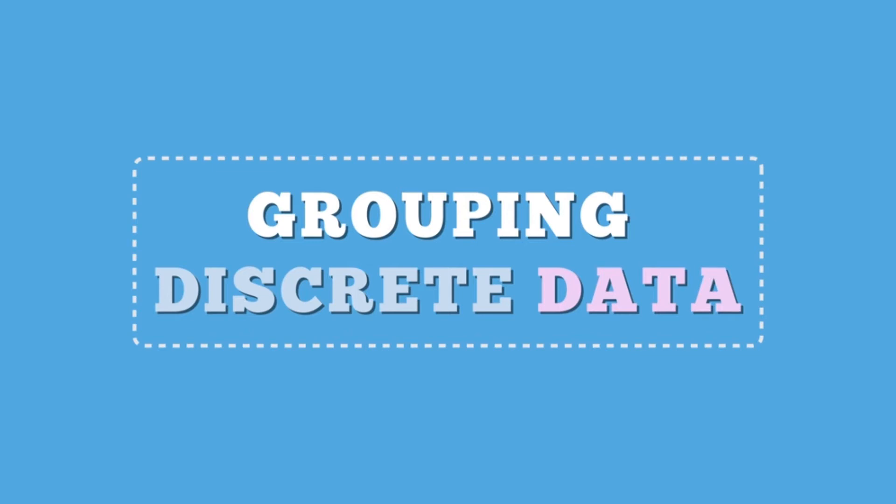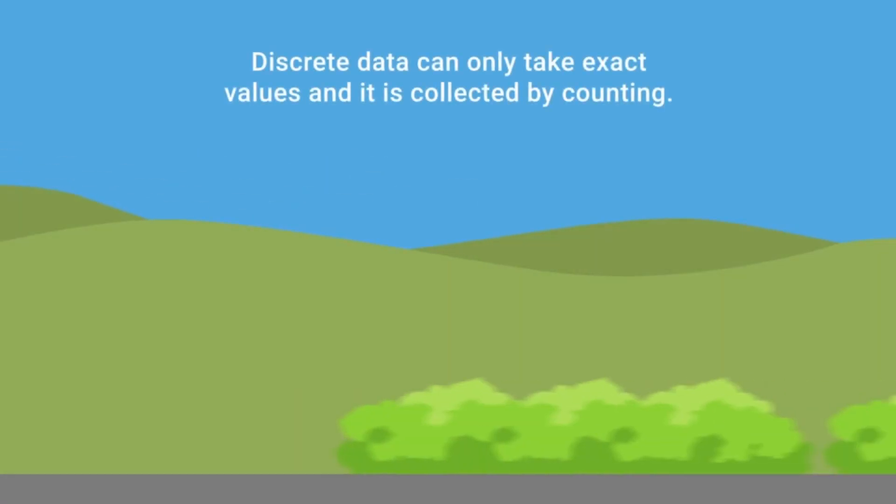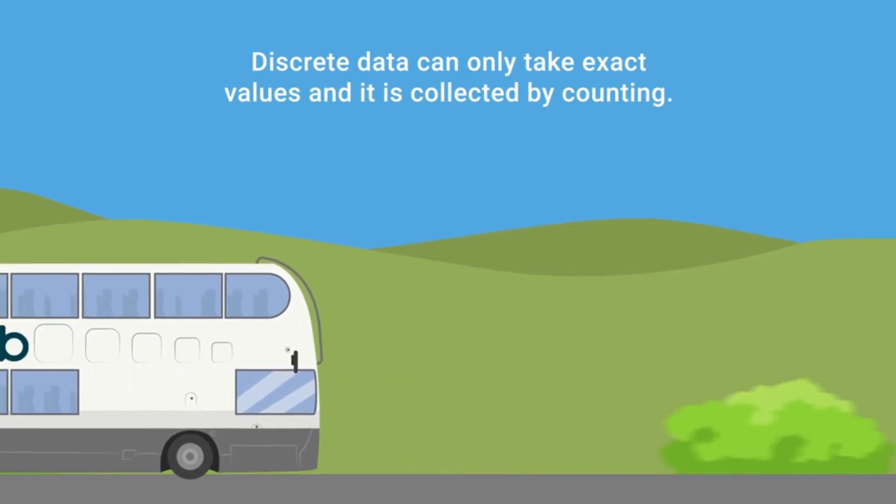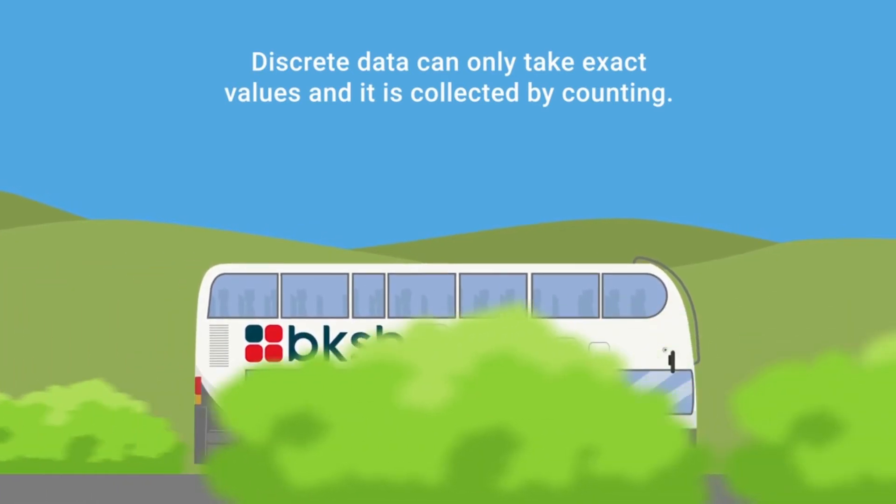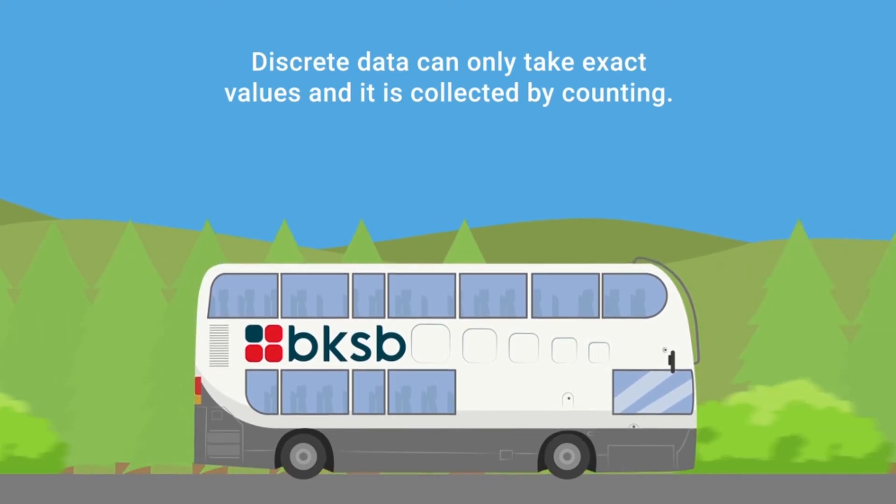Grouping discrete data. Discrete data can only take exact values and it is collected by counting, for example, the number of people on a bus or the number of trees in a garden.